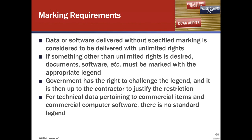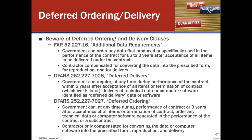Beware of deferred ordering and delivery clauses. The government only gets rights in what's actually delivered to them. You may have negotiated heavily on what the data and software deliverables are and be comfortable with the rights the government is going to get. But deferred ordering and data delivery clauses — particularly the additional data requirements clause under the FAR and the deferred ordering clause under the DFAR — give the government the right to order any technical data or computer software not specified as a deliverable if it was first produced or specifically used in the performance of the contract under the FAR, or generated in the performance of the contract under the DFAR, for up to three years after acceptance of all items or termination of the contract.